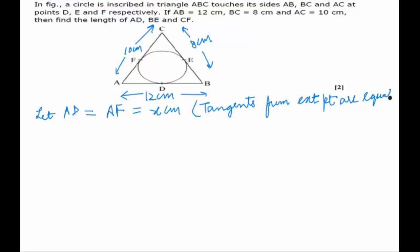Similarly, we can let BE and BD be equal, let's say to y centimeters, because of the same reason. And the last pair CE is equal to CF is equal to, let's say, z centimeters.